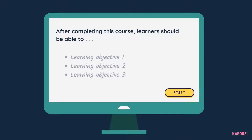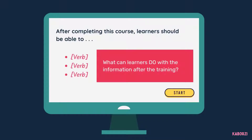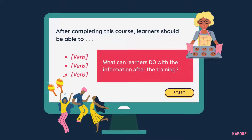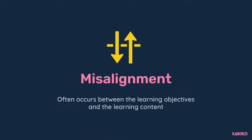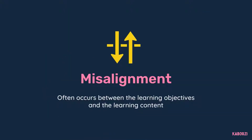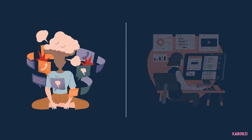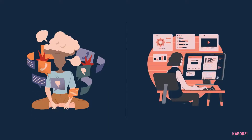Ideally, these bullets begin with verbs that tell us what we should be able to do with the information we'll be learning, such as dance the Macarena or bake a batch of chocolate chip cookies. But more often than not, there's a misalignment between the learning objectives and the learning content. There tends to be a whole lot of information dumping about the thing and not nearly enough time spent practicing doing the thing.